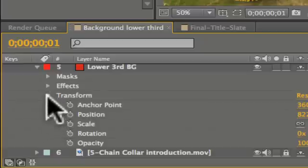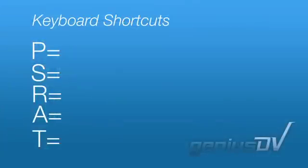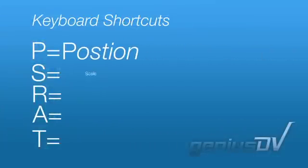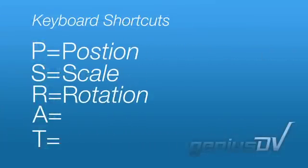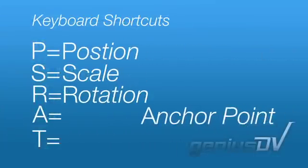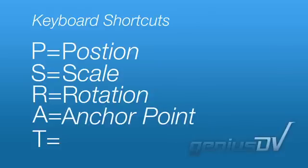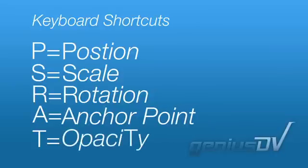If there is only one set of keyboard shortcuts you memorize, the most important are these: P for position, S for scale, R for rotation, A for anchor point, and T for opacity.